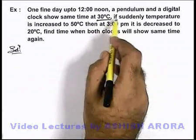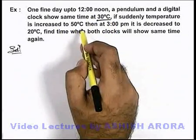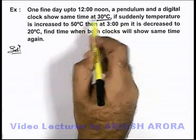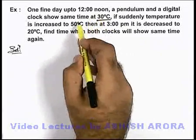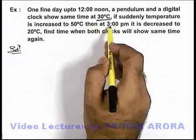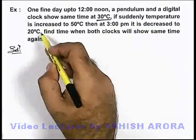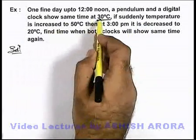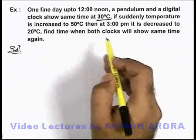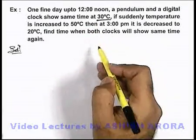If suddenly at twelve noon the temperature is increased to fifty degrees, certainly we can state that due to a rise in temperature by twenty degrees, the clock will slow down — it will start losing time. And at three pm, after three hours, when the temperature is decreased to twenty degrees, we can say it is ten degrees below the graduation temperature, so now the clock will start gaining time — it will be fast compared to the actual time.